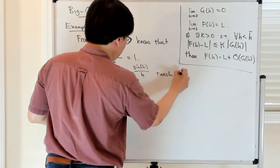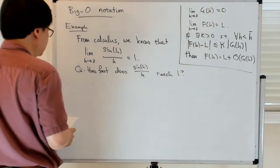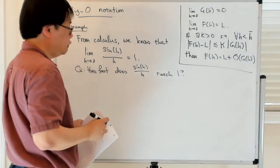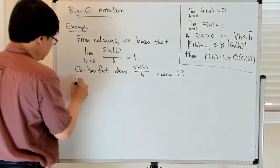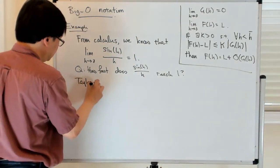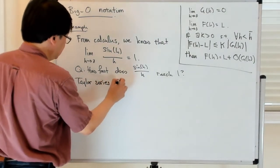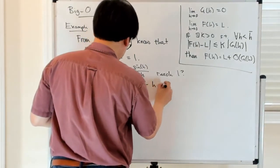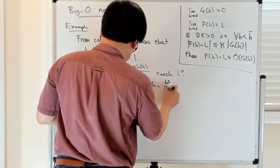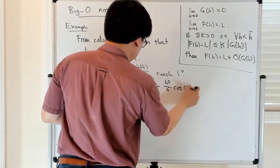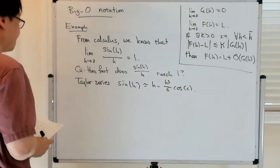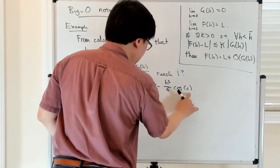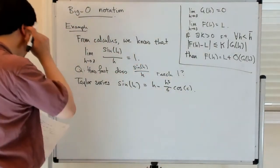So what you can do is a Taylor expansion for sine of h. So you can do a Taylor series for sine of h, and that's approximately equal to h minus h cubed over 6 cosine of some unknown point C. So this is actually, that's not approximate, that's equal. So I'm using the Taylor remainder term for some C.